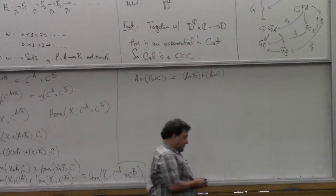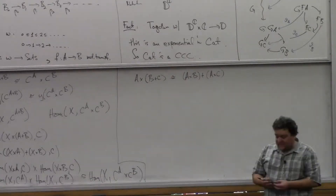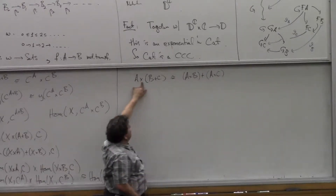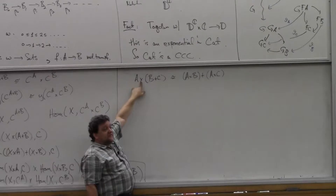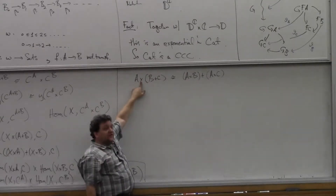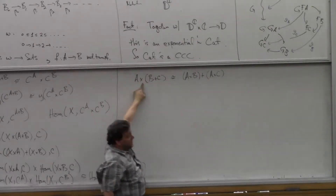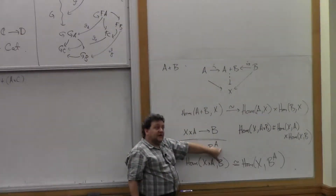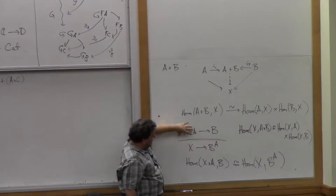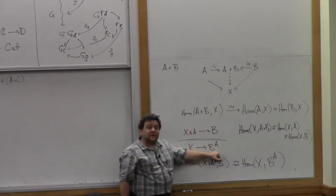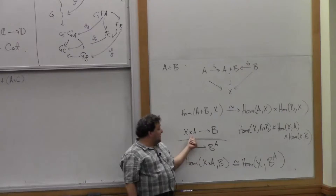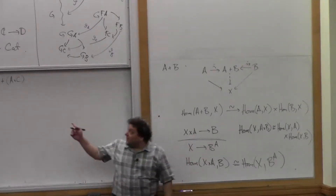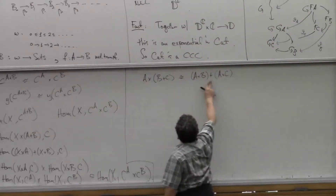That actually is a special case of a more general fact we'll meet in the next lecture. It's because the operation of taking product with A is a left adjoint. The exponent in a Cartesian closed category is its right adjoint. And adjointness means exactly that maps out of this one correspond to maps into that one. It's a general fact that left adjoints preserve coproducts.